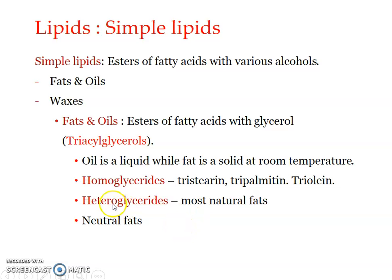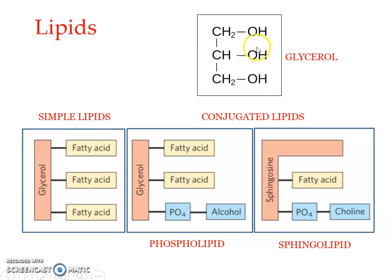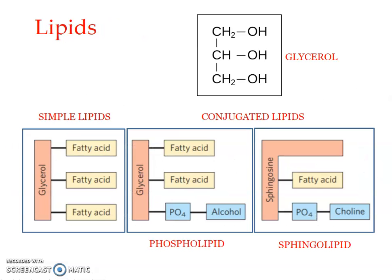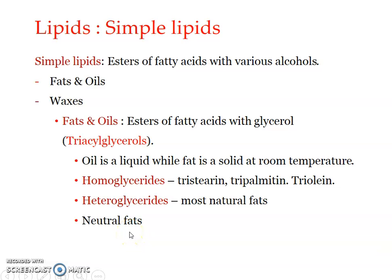In triacylglycerol, free acidic and basic groups are absent. The hydroxyl groups bind to carboxyl groups, so free carboxyl groups are absent and there are no free basic groups either — making them neutral in nature. That is why they are known as neutral fats. Neutral fats, otherwise called glycerides or acylglycerols, are products of ester linkage between fatty acids and glycerol. Triacylglycerols — three fatty acids plus one glycerol — are the most abundant among neutral fats. Oil is liquid at room temperature while fat is solid, but both fall under neutral fats.